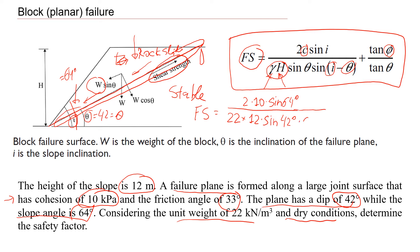And times the sine of... here, we have the difference between the slope angle, which is 64, minus 42 degrees. And we have this additional component, where we have friction angle. That's going to be tangent of friction angle, which is 33 degrees, and divided by the tangent of the inclination of the failure plane, which is 42 degrees.